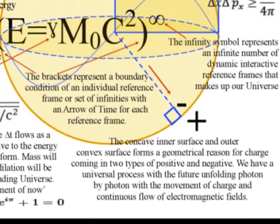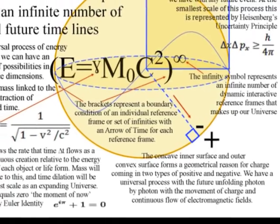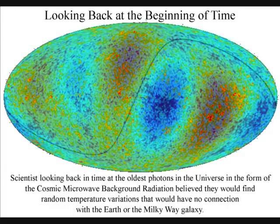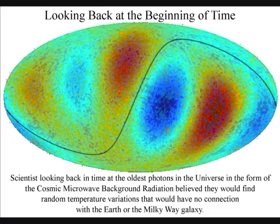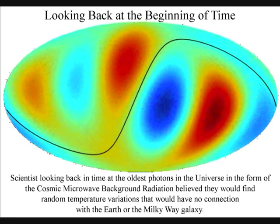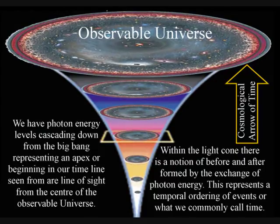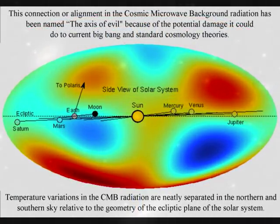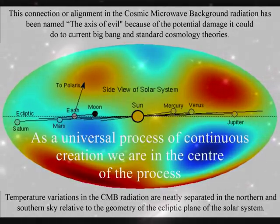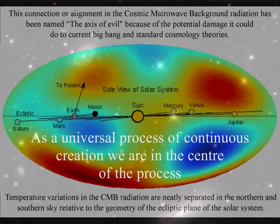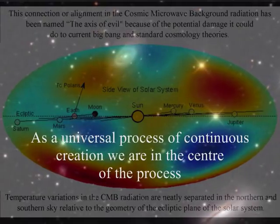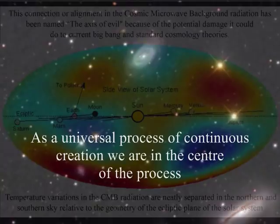The universal nature of this process can be seen if we look back through space and time at the oldest light in the universe, the photons from the cosmic microwave background radiation. We see spherical harmonic oscillations that cover the whole sky. These temperature oscillations in the cosmic microwave background radiation indicate a special direction in space or in a sense an axis through the universe. This axis is correlated back through space and time to us with the cosmic microwave background radiation being slightly warmer in the direction of movement of the local group of galaxies that includes the Milky Way galaxy. Also these temperature variations are neatly separated in the northern and southern sky relative to the geometry of the ecliptic plane of the solar system.